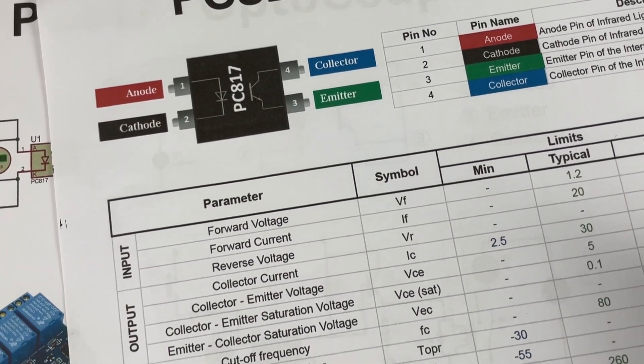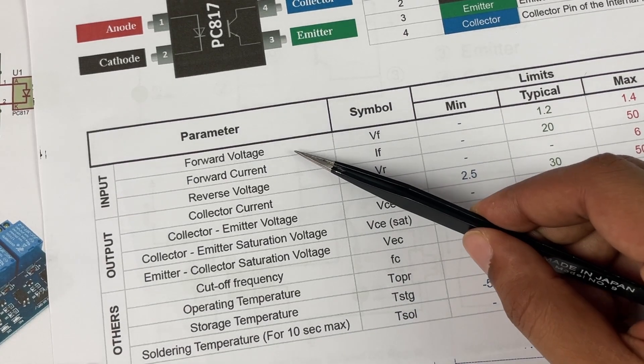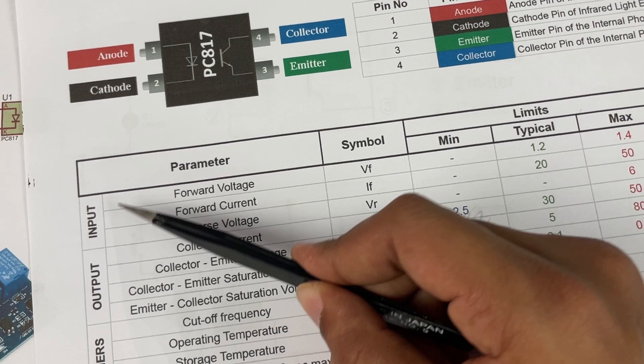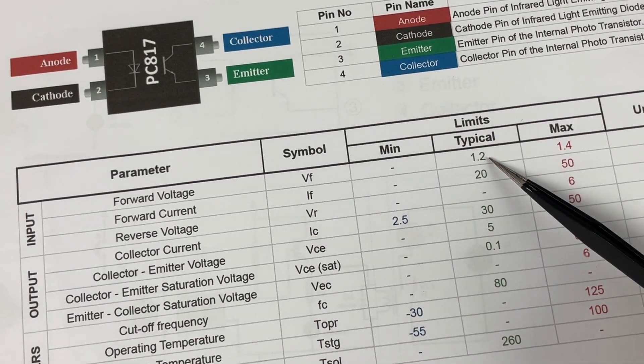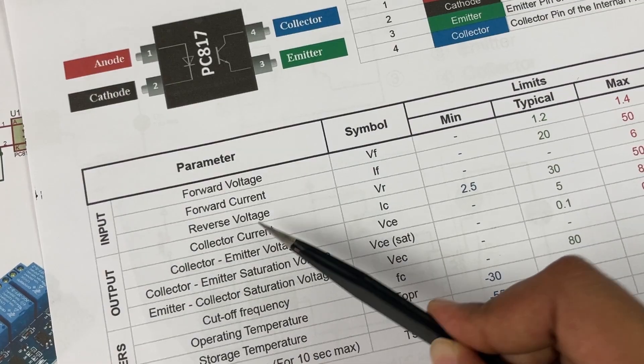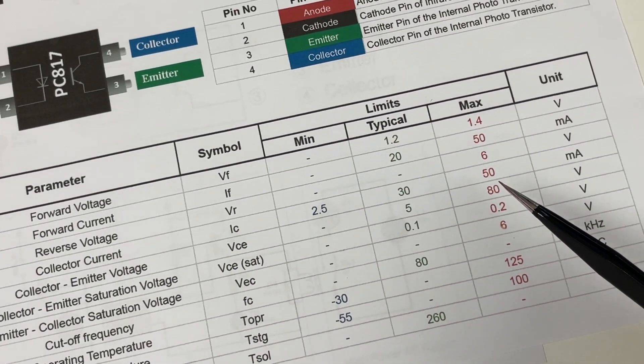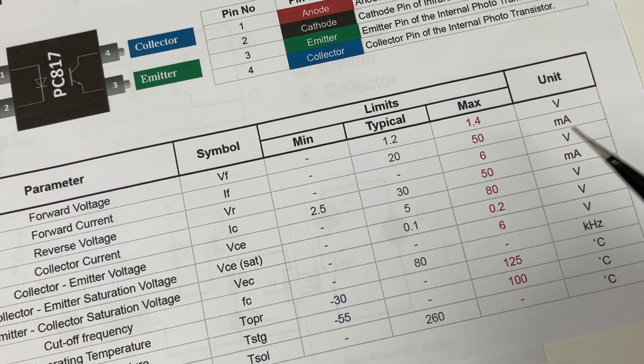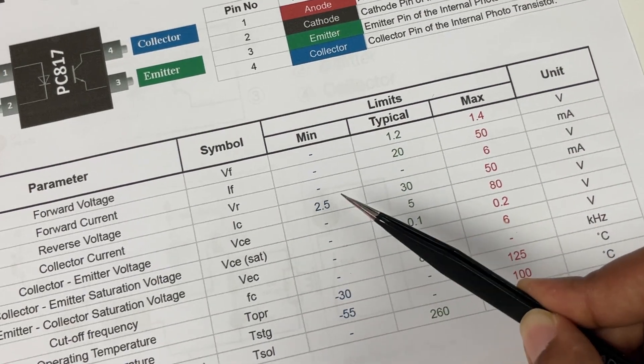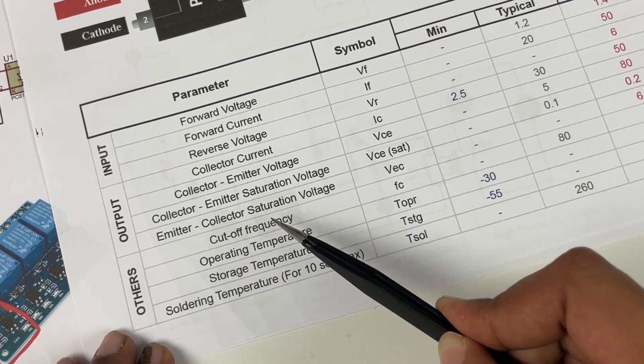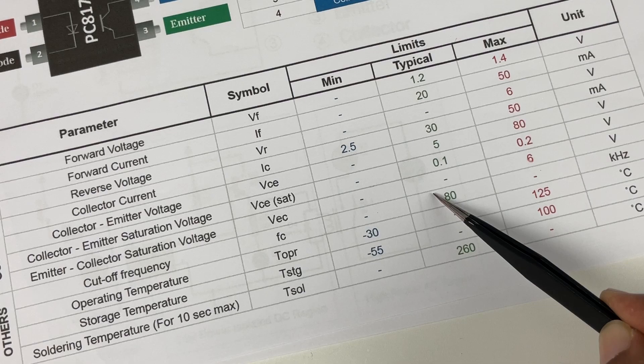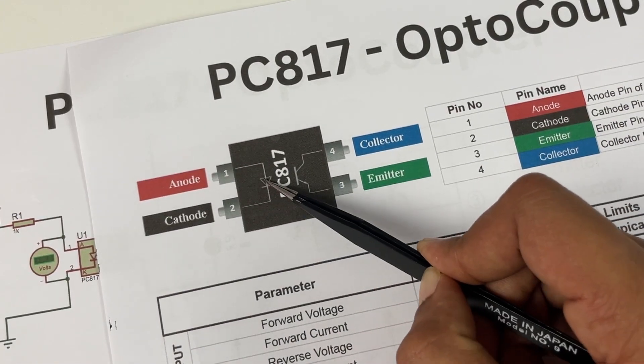To be able to use this optocoupler we should be aware of these parameters. The most important ones are the forward voltage and the forward current on the input side, that is the diode side. So the typical is 1.2 volts and 20 milliamps for this diode to turn on, and the collector current IC can be a maximum of 50 milliamps but the typical value is around 30 milliamps and the minimum current that should flow is 2.5 milliamps. Another important parameter is this cutoff frequency which in our case is 80 kilohertz. So this is the maximum frequency at which we can turn on and off this diode. It becomes more clear if we take a look at this simulation.